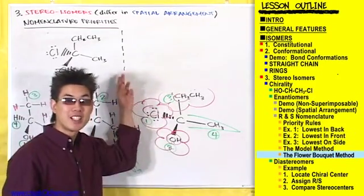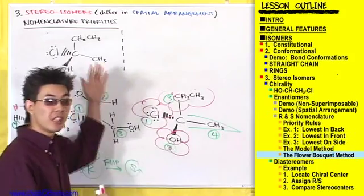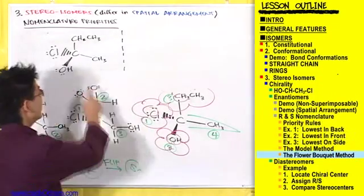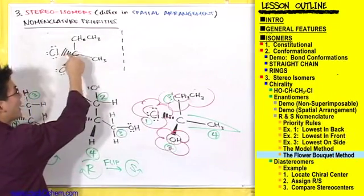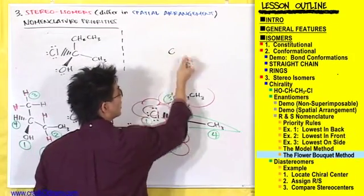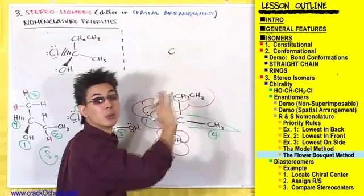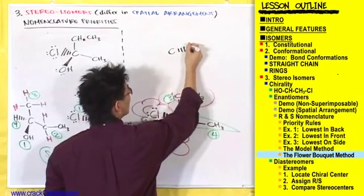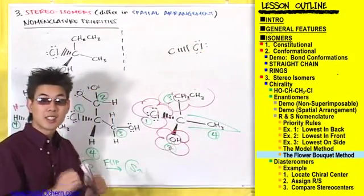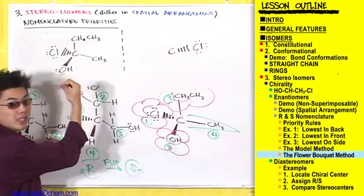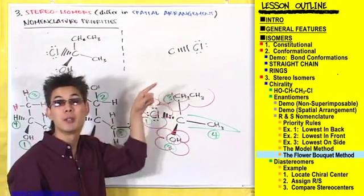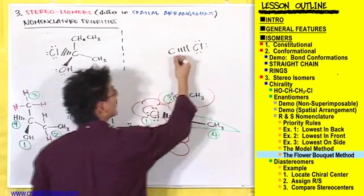After you draw your imaginary plane, just draw these as if they were reflections of each other across that plane. This carbon has a chlorine going to the back and to the left, so the enantiomer will have a carbon with the chlorine going to the back but to the right. We have an OH pointing to the front and to the left, so in the enantiomer we're going to have an OH pointing to the front but to the right.